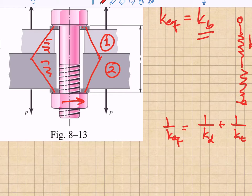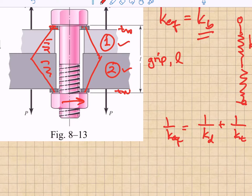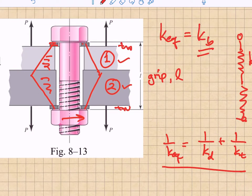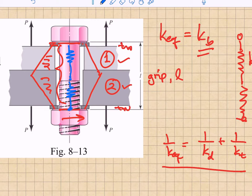The grip length, lowercase l, is the thickness of all the compressed components — including the top washer, the top plate, the bottom plate, and the lower washer if present. Focusing on the bolt, the bolt length within the grip runs from the top to the bottom of the grip. There is a spring constant for the unthreaded portion and a spring that represents the threaded portion of the bolt in the grip.